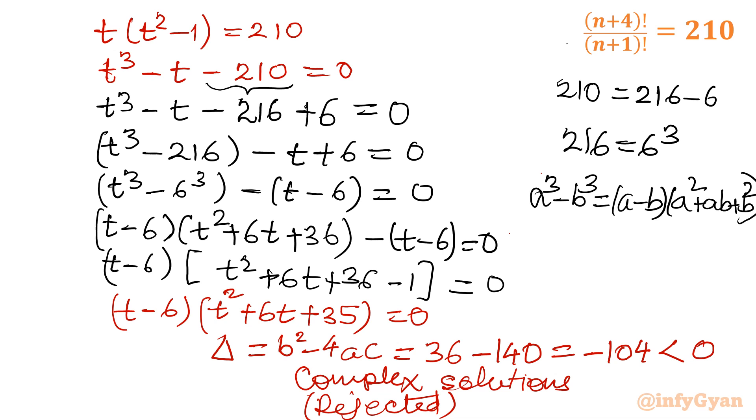Because for factorial, we have real values and n belongs to whole numbers. So what is left is t-6. From here we can write t-6 equal to 0, so that means t equals 6. Now the point is, what is our t? We considered t was n+3. So I will put n+3 equal to 6, so n will come out as 6 minus 3, which is 3. So our solution is n equal to 3. Let us check.